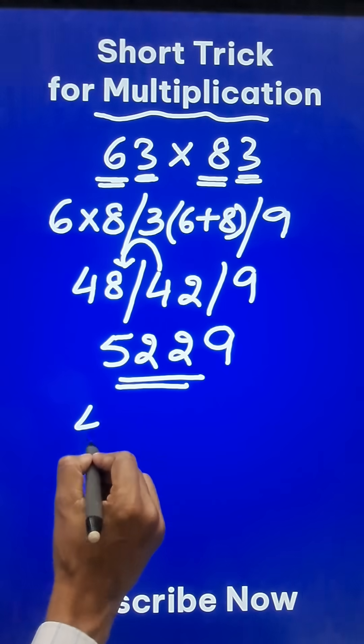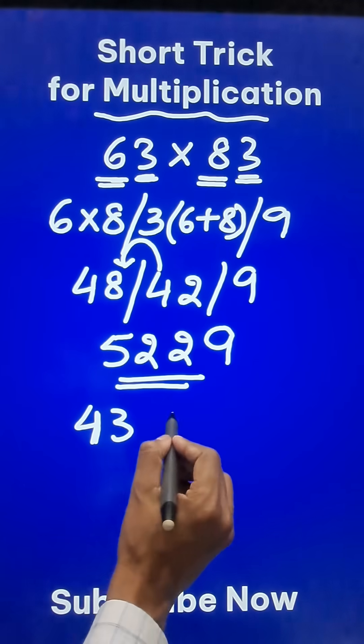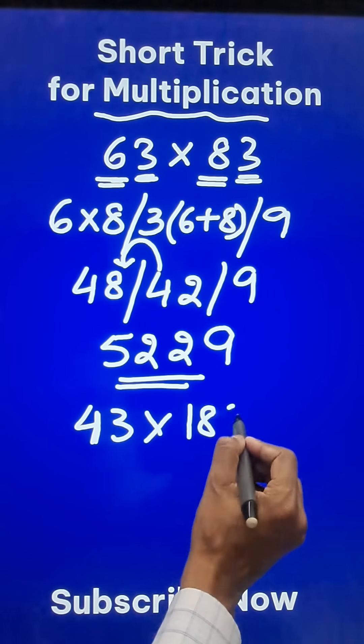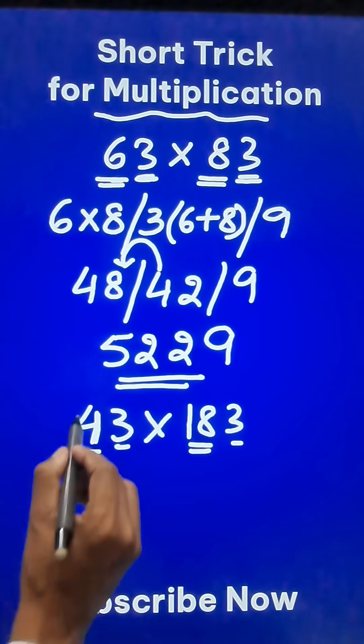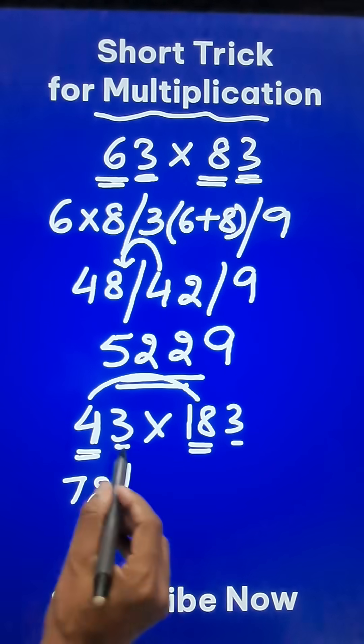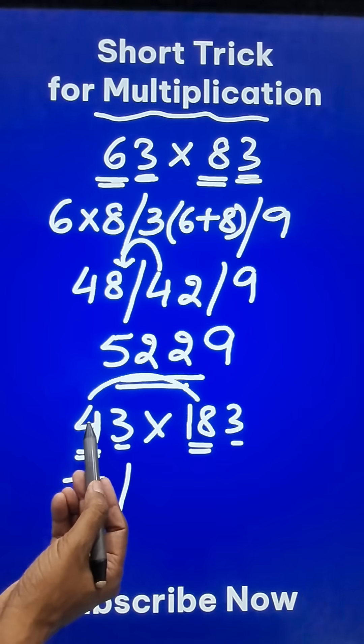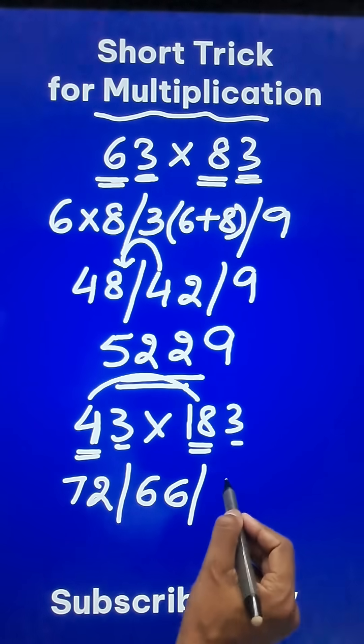Likewise, if there is a 3-digit number, the trick still works. Suppose you have to do 43 times 183. Apart from the 3's here, you have 4 and 18. 18 times 4 gives you 72, and 3 times the sum—18 plus 4 is 22, and triple of that is 66—and finally 3 times 3 is 9.